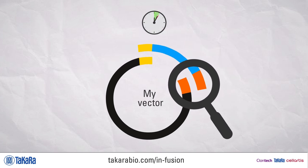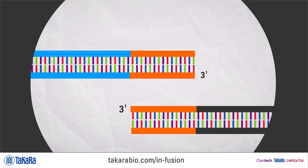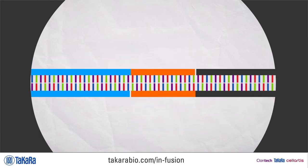Our enzyme mix chews back nucleotides from the 3-prime ends of linear DNA, allowing complementary base pairs of the vector and insert to join and anneal in the right direction.